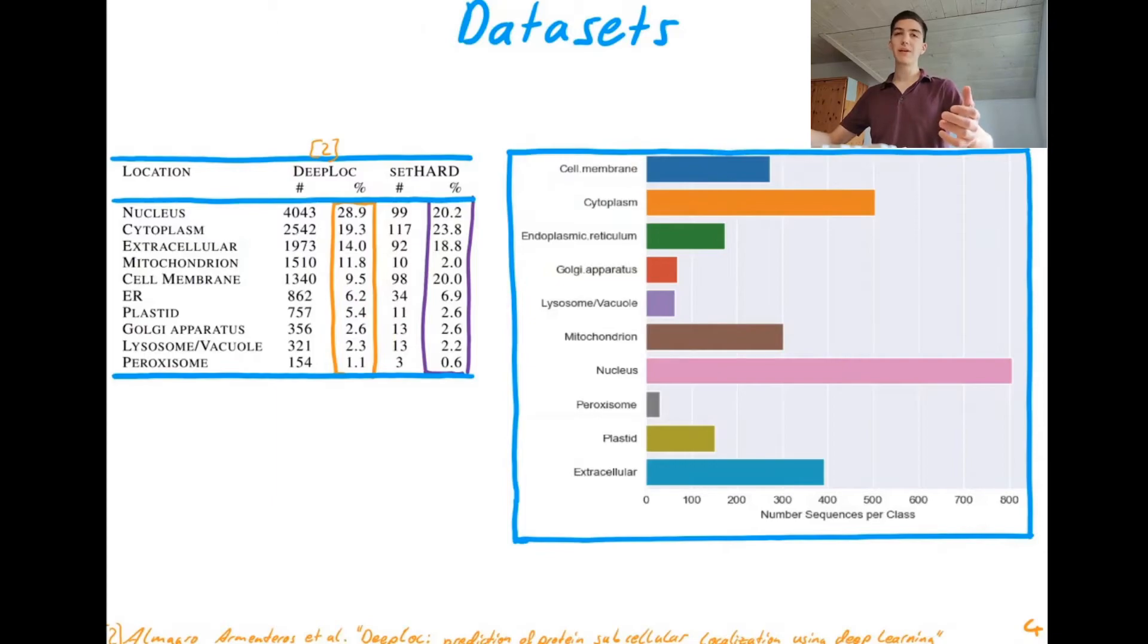Then what do we evaluate our method on? Well, we have this DeepLoc data set which is probably the standard data set for subcellular localization prediction. So maybe what ImageNet is for images, this is for subcellular localization prediction. In this data set we have these 10 different location classes and we can also see over here that they're really unevenly distributed and we have very high class imbalance. So we train on DeepLoc and evaluate on the DeepLoc test set but besides that we also create this new set HARD which has a different class distribution from the training data set and it has much less sequence similarity to the training data, so it's much harder to make correct predictions for it.